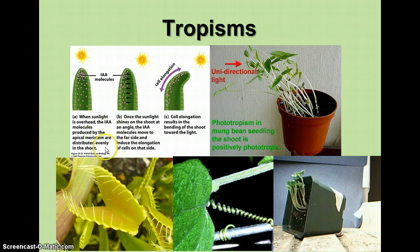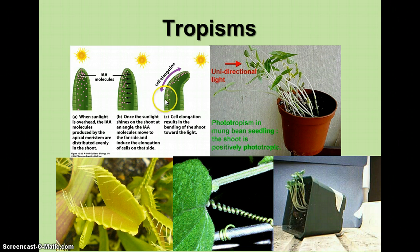Here are some pictures showing phototropism. Auxin molecules are distributed evenly in the shoot, but when sunlight shines on it, they move to the far side and increase elongation of the stem on that side, which causes it to curve toward the light. This happens relatively quickly — many plants move in response to light on one side within just a few hours.